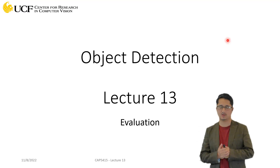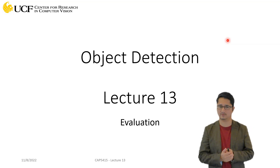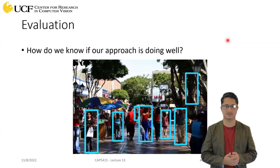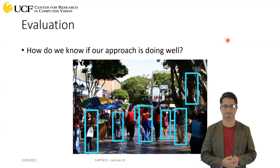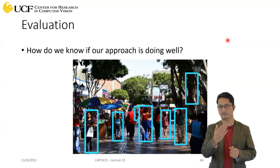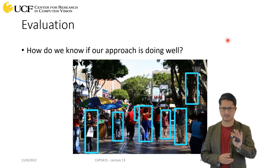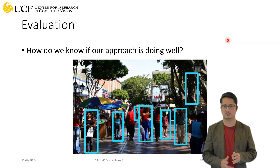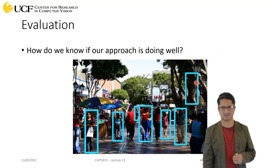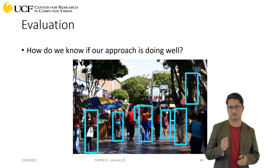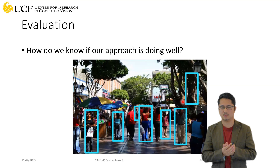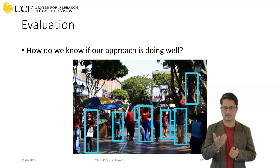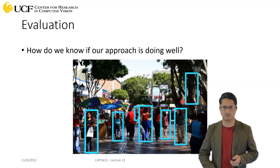We'll talk about how we evaluate object detection algorithms. If your algorithm is saying all these are people, visually we can say it's kind of doing a good job — it's missing some individuals and some are wrongly predicted. We need a number between zero and one which says how good this algorithm is, so we can compare multiple algorithms, because just looking at an image it's very hard.